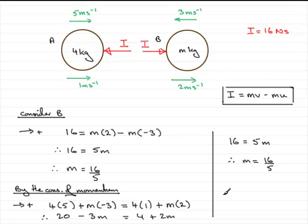So you can either do this question then by looking at the impulse acting on b or by the conservation of momentum. Okay. Well that brings us now to the end of this question.